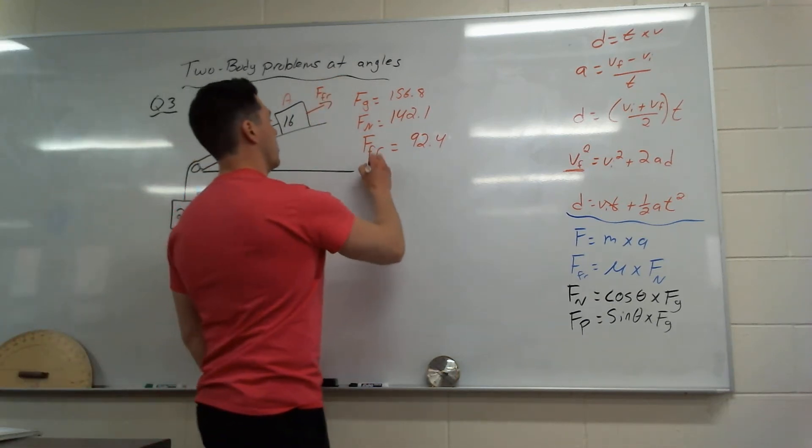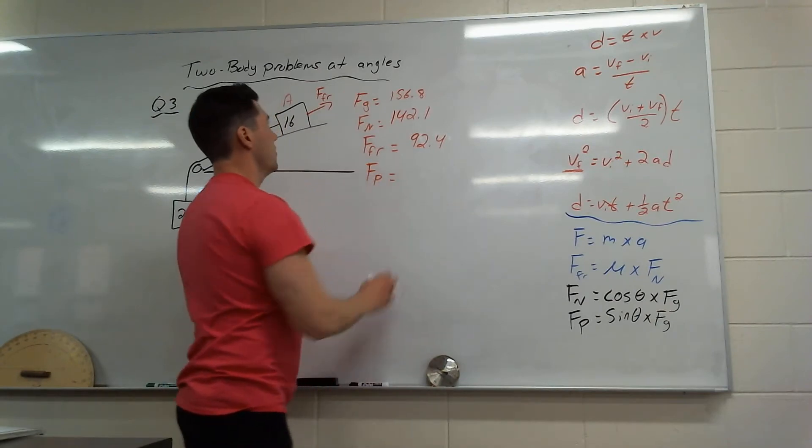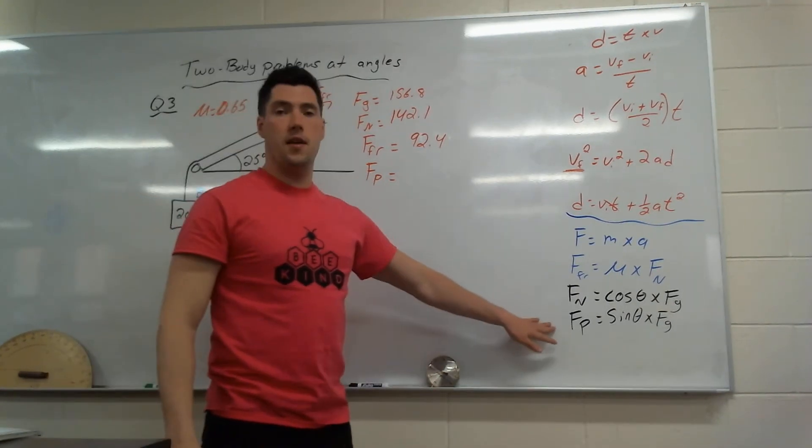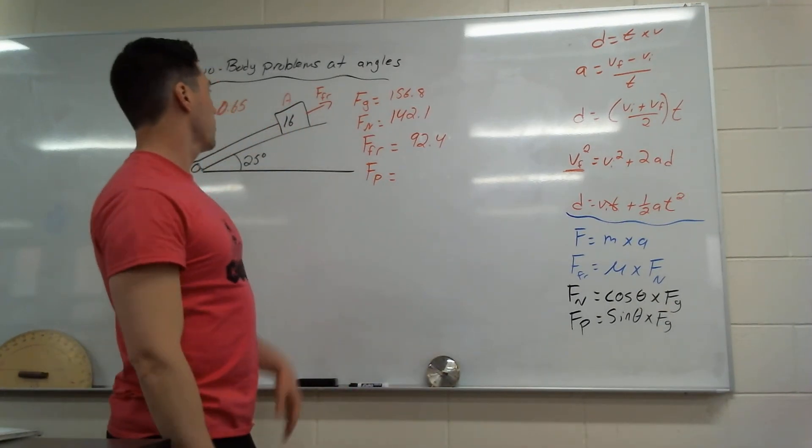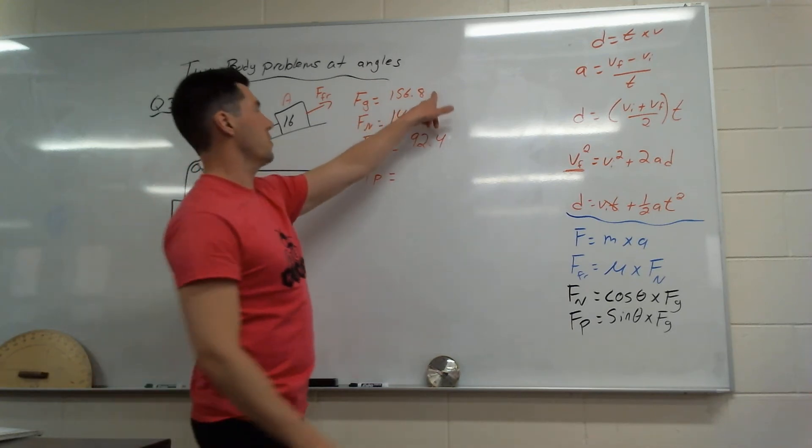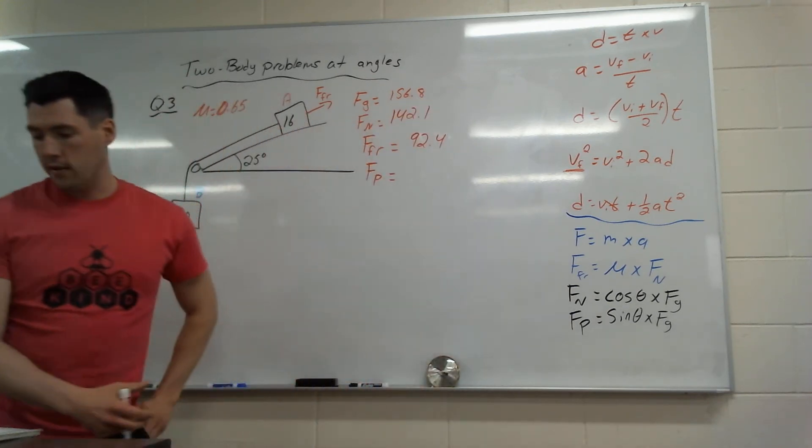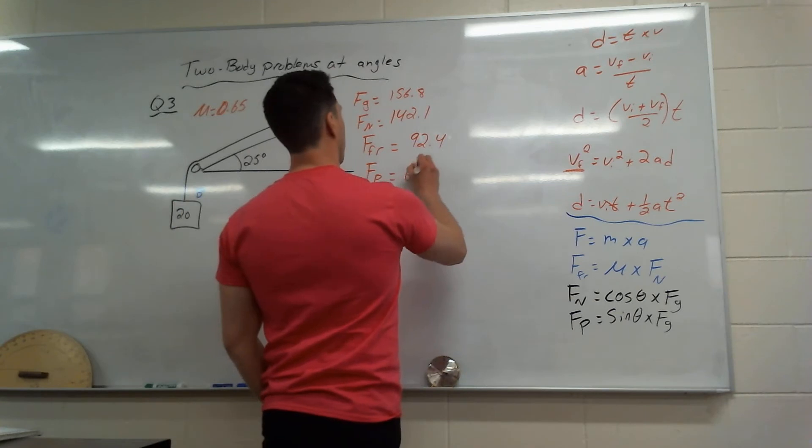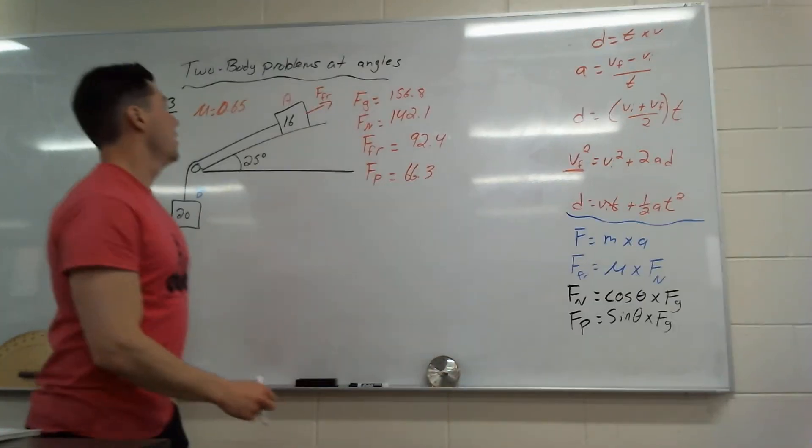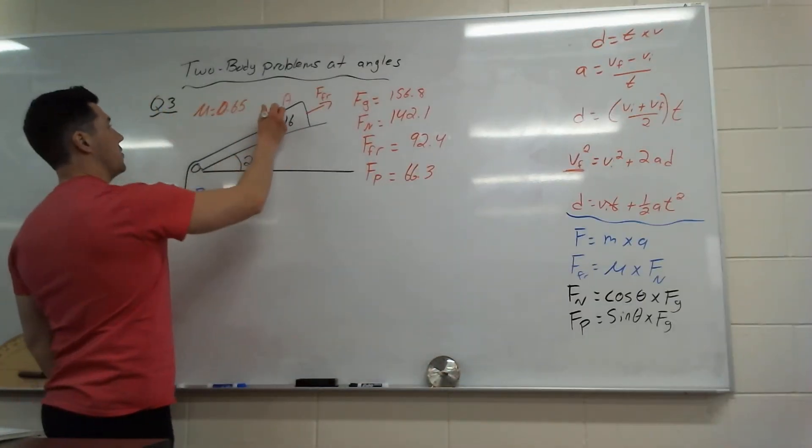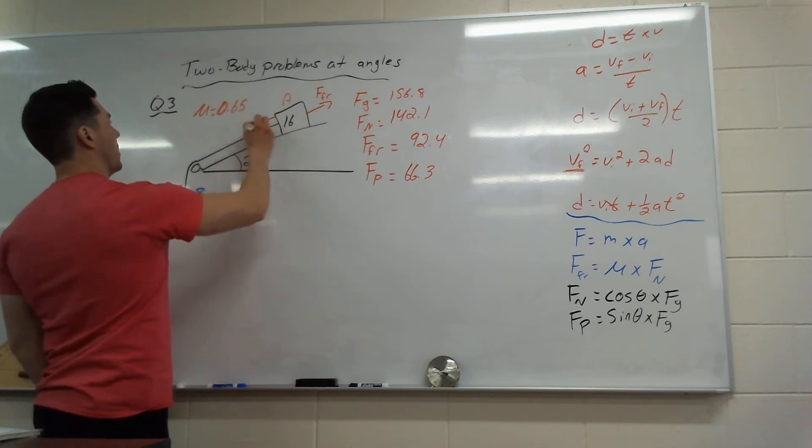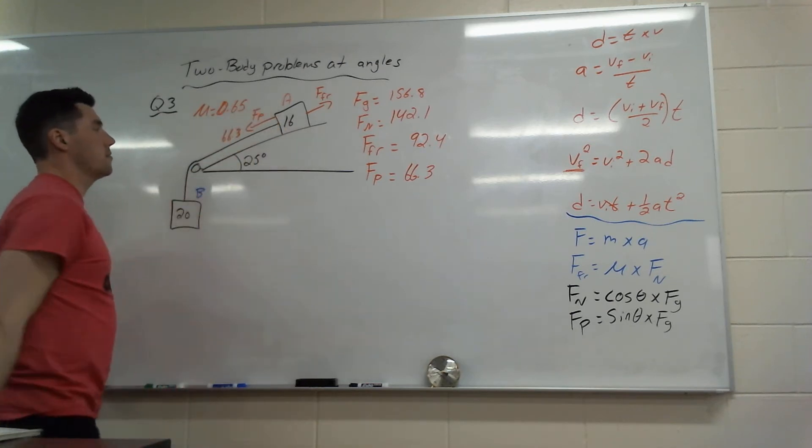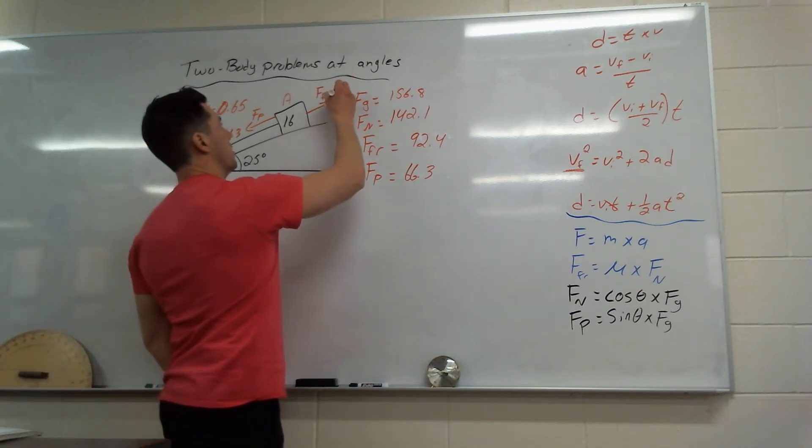Let's find force parallel. Force parallel is going to be sin theta times force of gravity. So sine 25 times 156.8, and I get 66.3. Now you'll notice it's going to want to go down the ramp, so it's actually going to be helping this way. Force parallel of 66.3 is going down. And then I put 92.4 here.